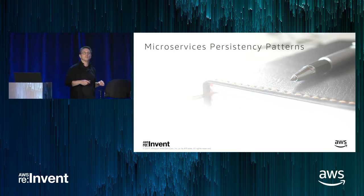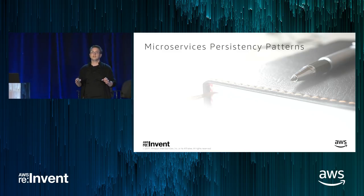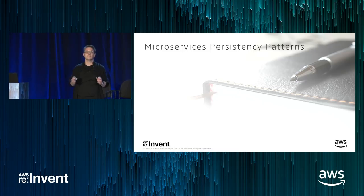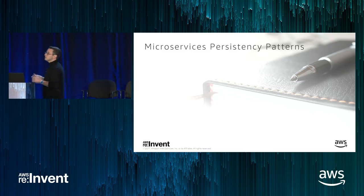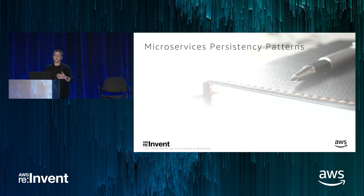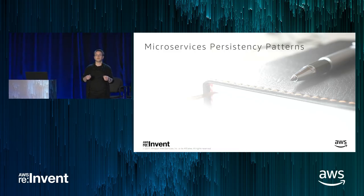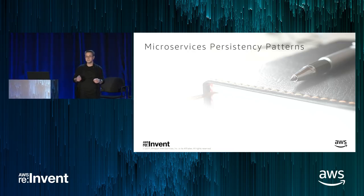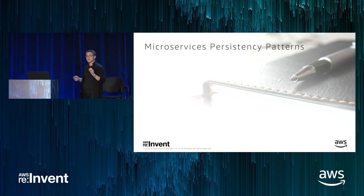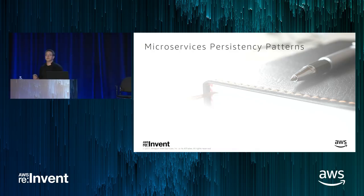Until now I've spoken about the why and the what of teasing apart our monolith: we want to achieve development velocity by breaking the monolithic application into microservices and also teasing apart the monolithic database. Now I want to talk about the how — focusing on how to tease apart the monolithic database. I'll cover three common scenarios customers face: shared static data, shared mutable data, and transactions.